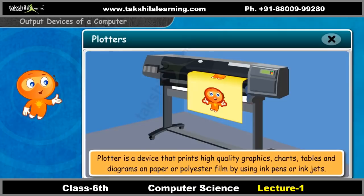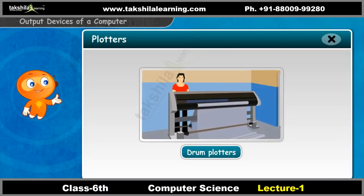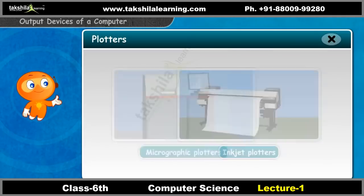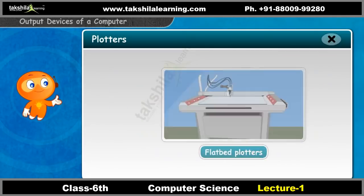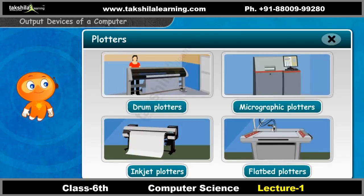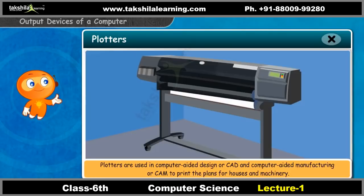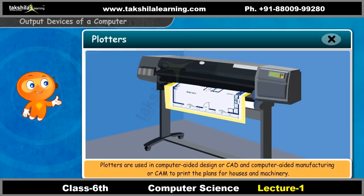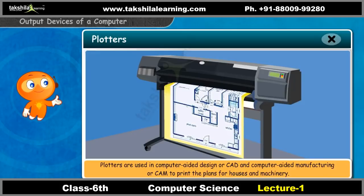A plotter is a device that prints high quality graphics, charts, tables, and diagrams on paper or polyester film by using ink pens or inkjets. There are four types of plotters: drum plotters, micrographic plotters, inkjet plotters, and flatbed plotters. Plotters are used in computer-aided design (CAD) and computer-aided manufacturing (CAM) to print plans for houses and machinery.